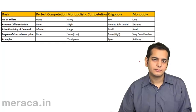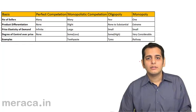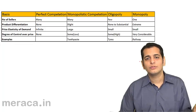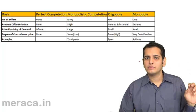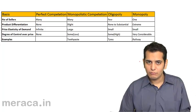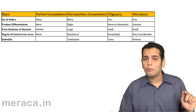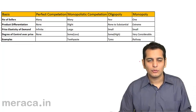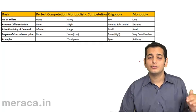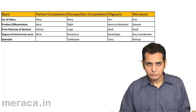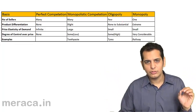Next, we come to oligopoly. 'Olig' means few, so this is a market where there are few sellers. In perfect competition and monopolistic competition you had many sellers, but in oligopoly there are only a few sellers. However, there are a large number of buyers. So it's a market with few sellers and a large number of buyers — this is oligopoly.